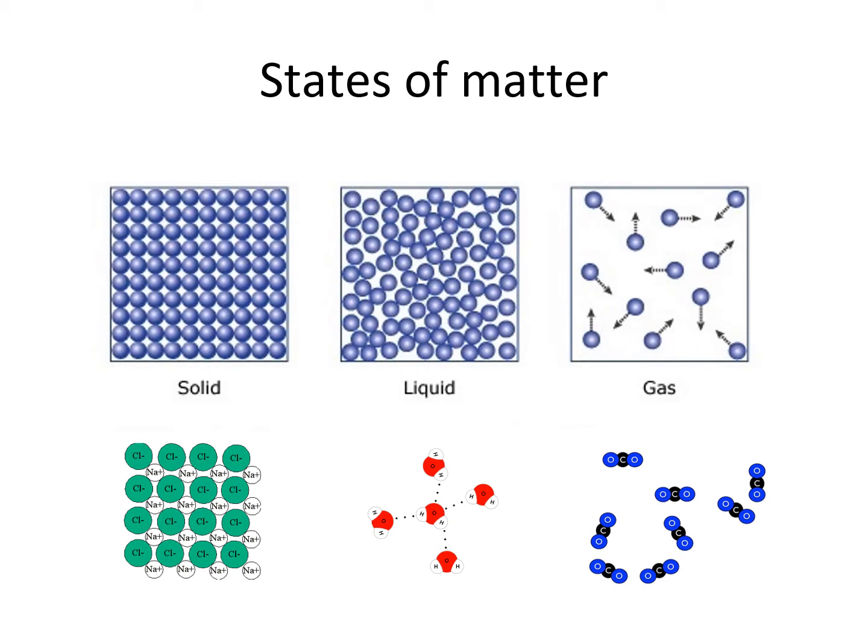Gases have very weak intermolecular forces between their molecules. For example, one carbon dioxide molecule interacting with others has no strong force bringing them together. They have London dispersion forces, which are weaker, and that is why the molecules are farther away from each other. However, dispersion forces become greater as the size of the molecule increases.